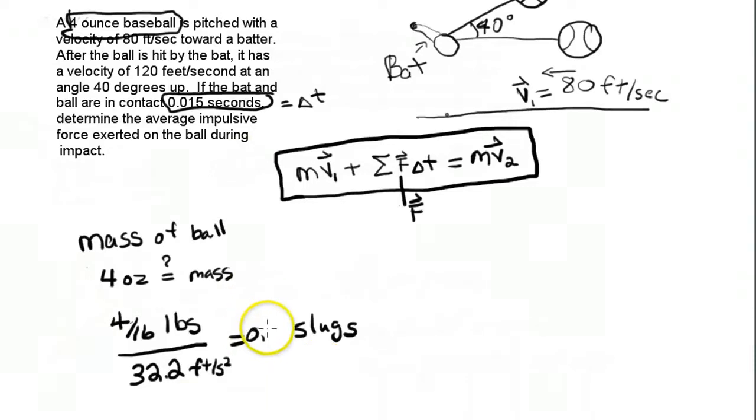Let's rewrite that. 0.0078 slugs is the mass of the ball.